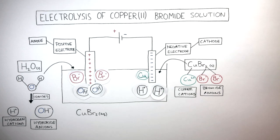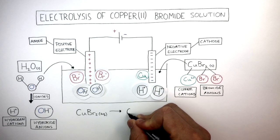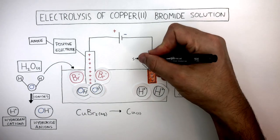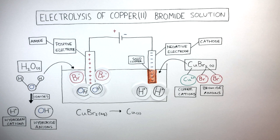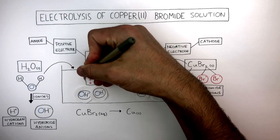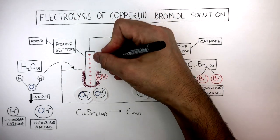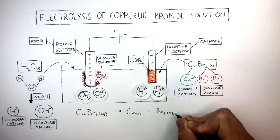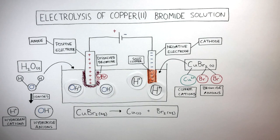We can show this in the equation: CuBr₂ forms Cu(s) for solid. Orangey-brown copper forms around the cathode. At the anode, the bromide anions form bromine molecules. This appears as a reddish-brown liquid — dissolved bromine appearing around the anode. We can show this in the equation by adding Br₂(aq), as the bromine is dissolved. Notice how the hydroxide and hydrogen ions are left in solution; they can easily ionize back into water, forming the simple molecule that water is.